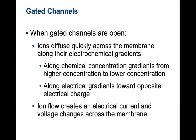When gated channels are open, ions will diffuse quickly across the membrane along electrochemical gradients — meaning you have a charge but also the chemical part, which is the actual ion. Along chemical concentration gradients, they will travel from higher to lower concentration. Along an electrical gradient, they will travel towards the opposite electrical charge. So positive sodium ions on the outside will travel towards the negatively charged inside. The ion flow caused by opening of gated channels will create electrical currents, and voltage changes will occur across the membrane.